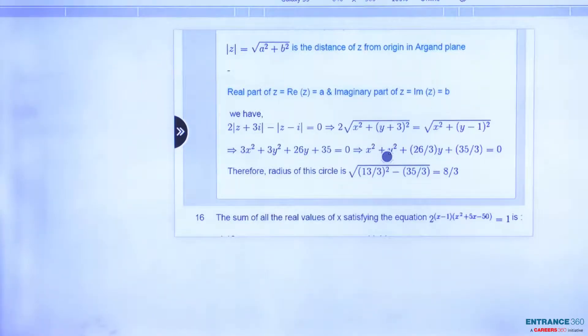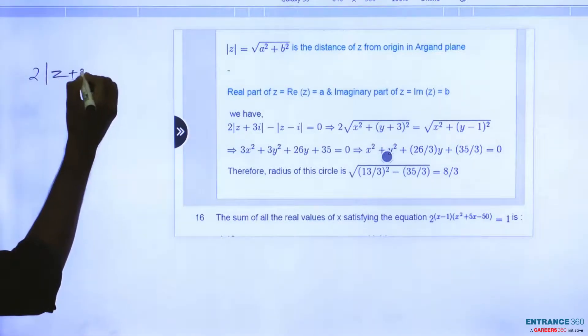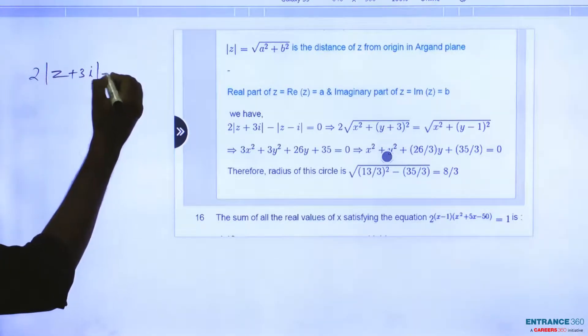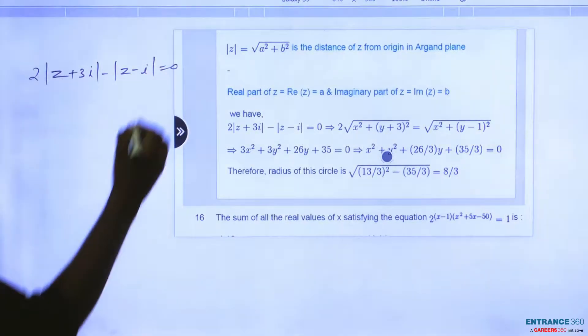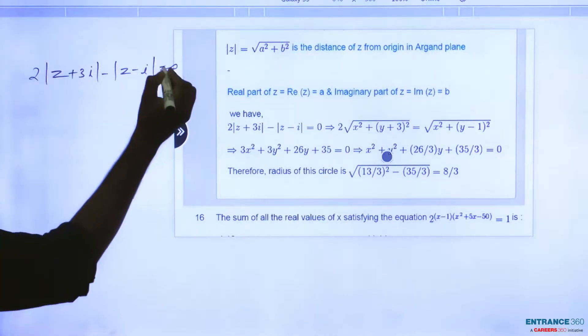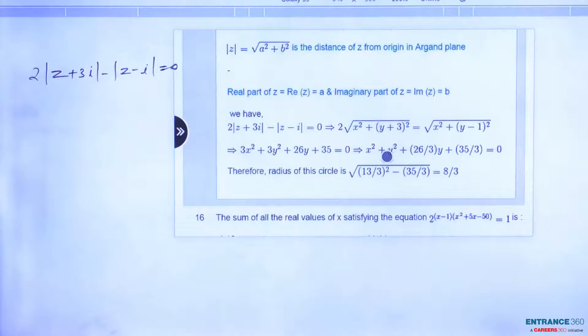You can see the question, simple. In the question it is given 2z plus 3i minus z minus i equal to 0. This equation is represented by which equation? Then we have to solve.